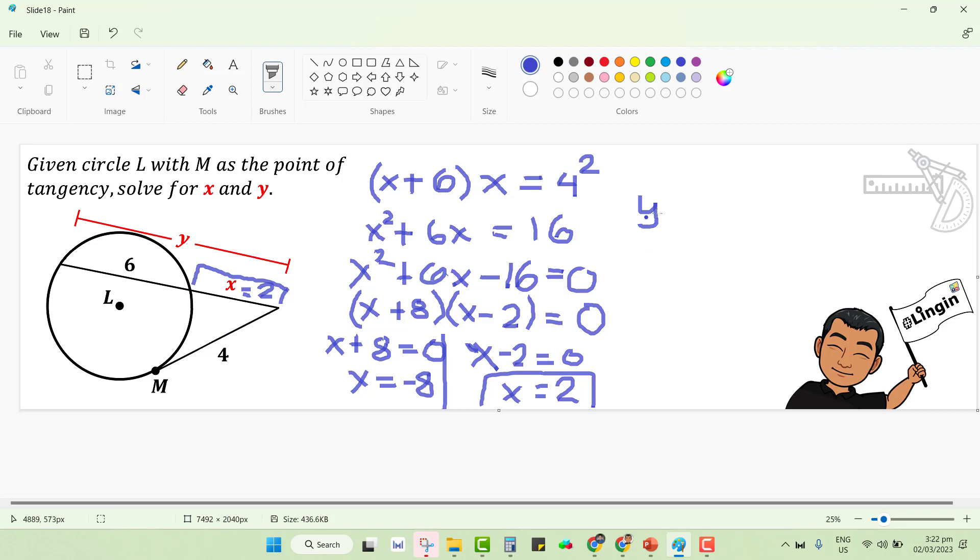And we can use x to solve for y. Since y is the entire secant segment, it's 6 plus x or x plus 6 in any order. It's commutative. So you will have 6, that's 6 plus 2.